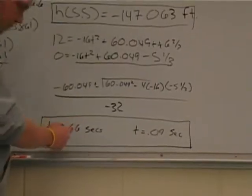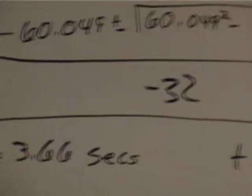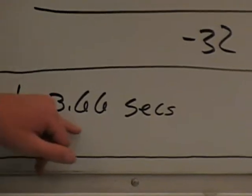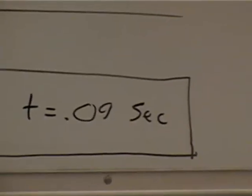So from there, we can find the time in which it takes to be 12 feet tall. It's going to be 3.66 seconds and 0.09 seconds.